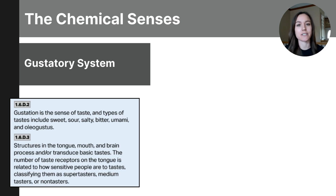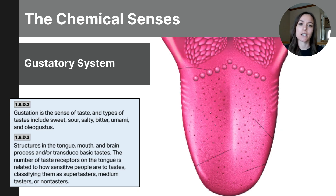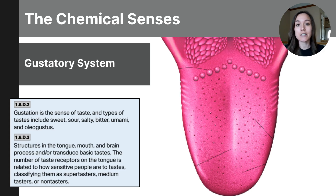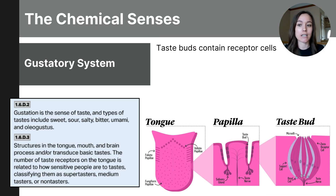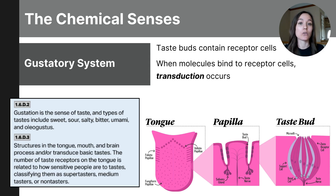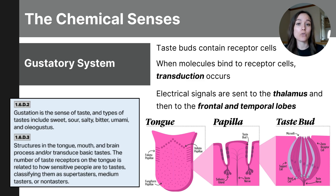Now let me outline the process of gustation. The gustatory system consists of the tongue, taste buds, and nerves that send information to the brain. This process begins in the mouth where specialized structures called taste buds detect taste. Taste buds are located within the papillae, which are small bumps on the tongue. Each taste bud contains receptor cells that respond to different chemical molecules. When food molecules bind with taste receptors, those receptors convert that information into electrical signals through transduction. These signals travel through nerves to the brain stem, up to the thalamus — the sensory relay station — and then to the frontal and temporal lobes to be processed as taste.